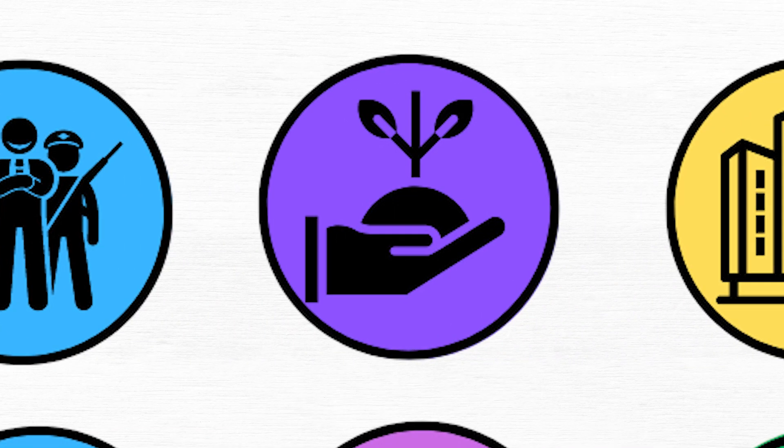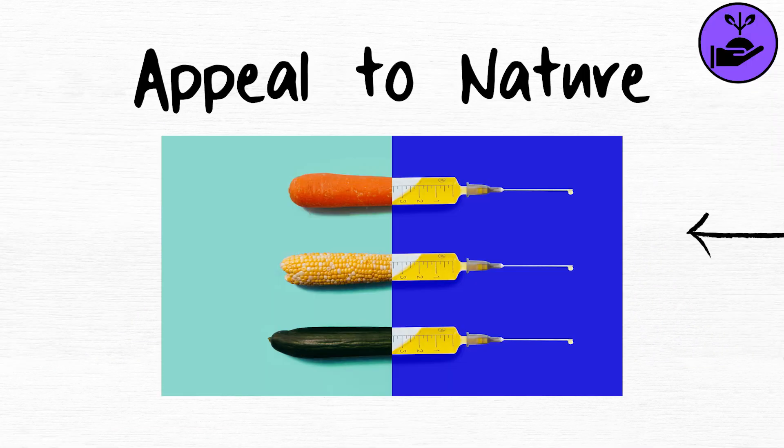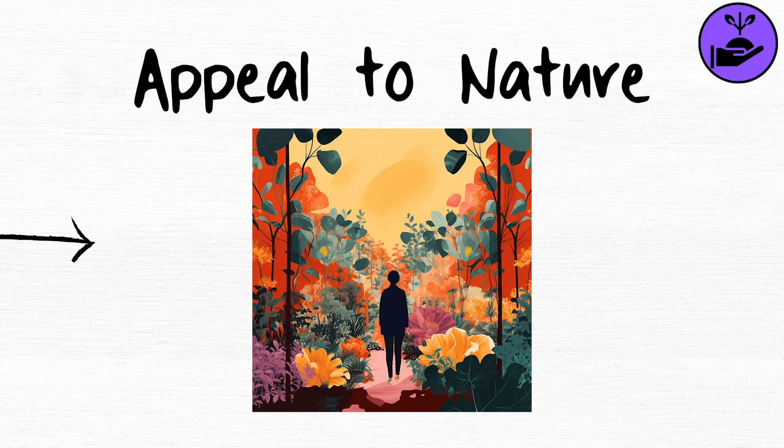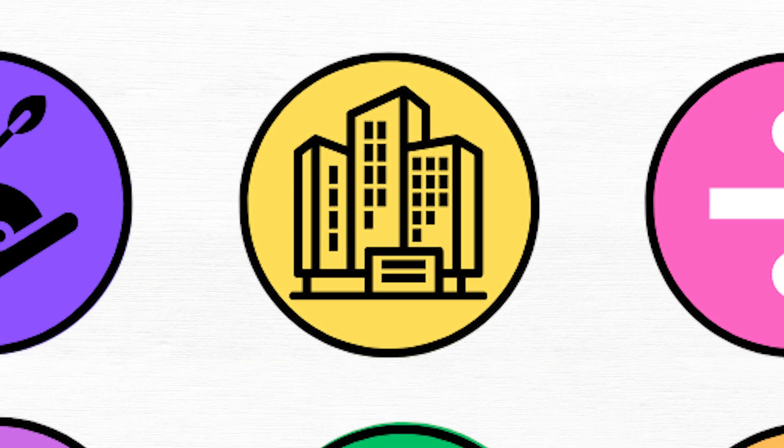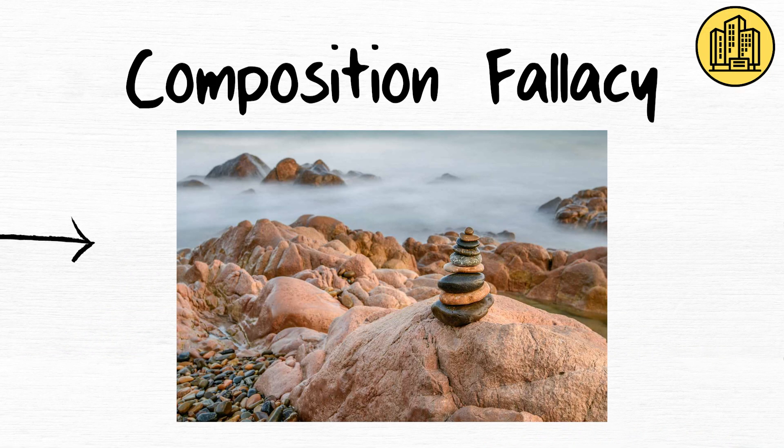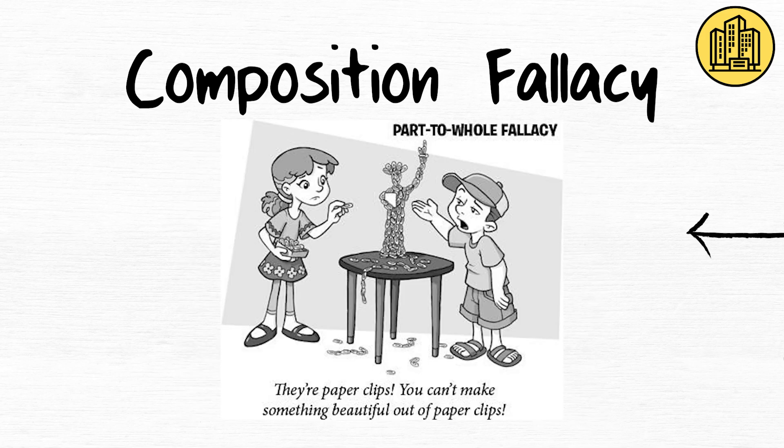Appeal to nature assumes that something is good or bad based on whether it is natural. Composition fallacy. The composition fallacy infers that a property of the whole applies to its parts.